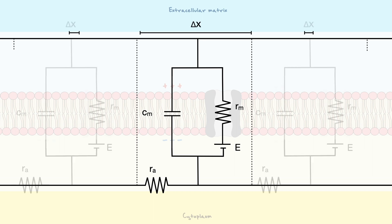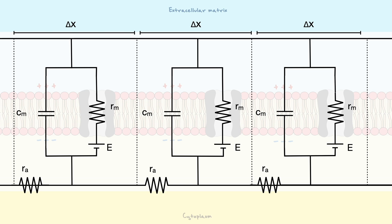Remember that we have segmented our membrane in short segments of length delta x. Hence, each segment of length delta x will have its own little circuit. Also, since each component is defined as per length, we need to multiply them by the length of the slice to get an accurate value, except for the membrane resistance, which is divided because of its inverse proportionality.